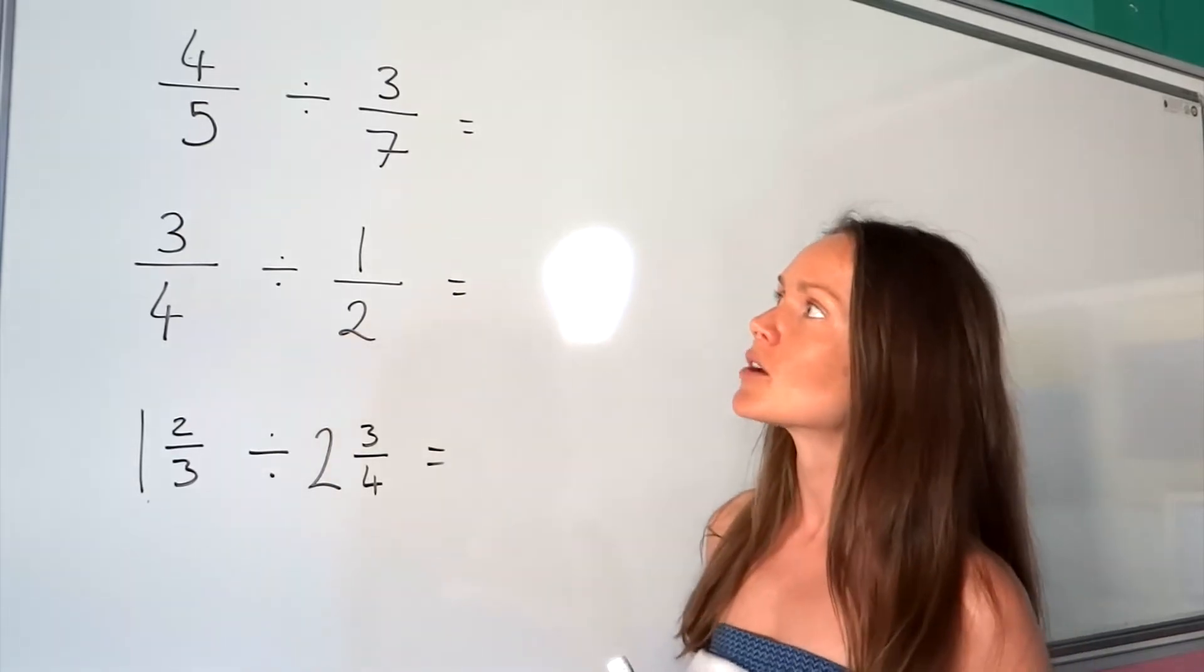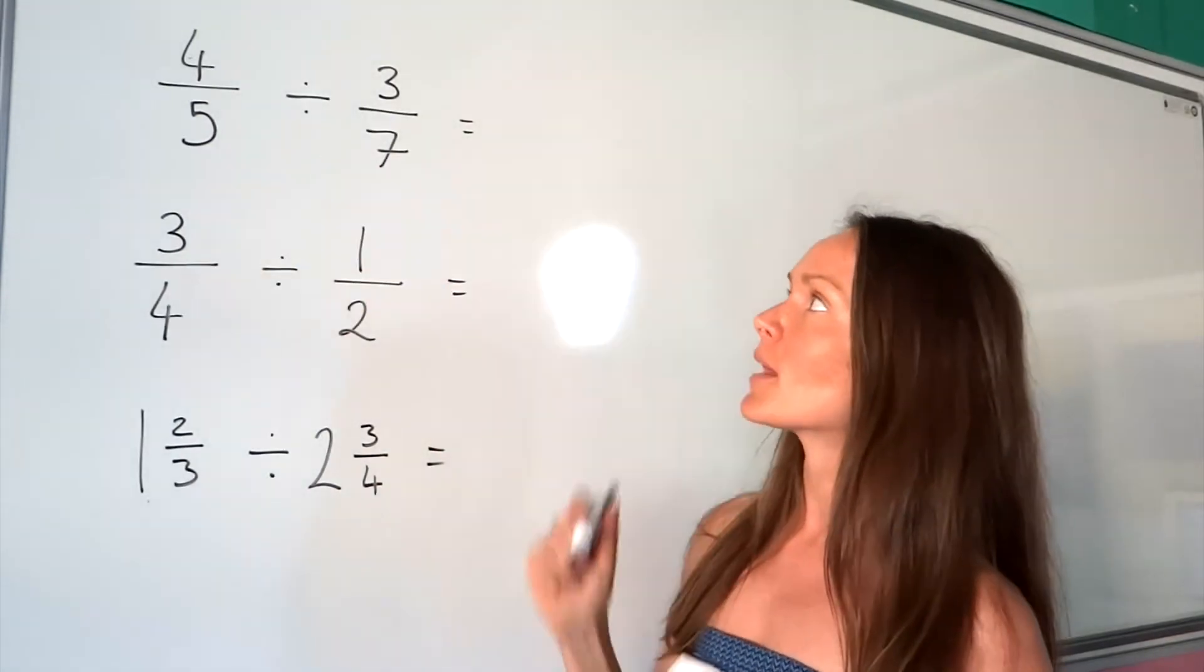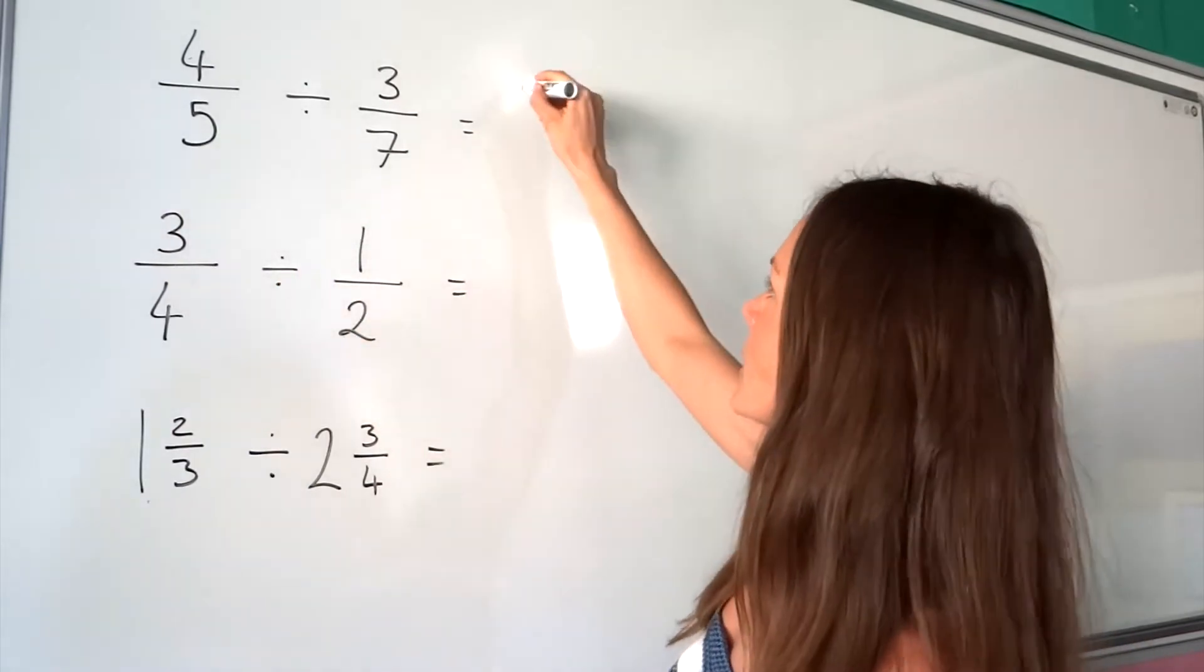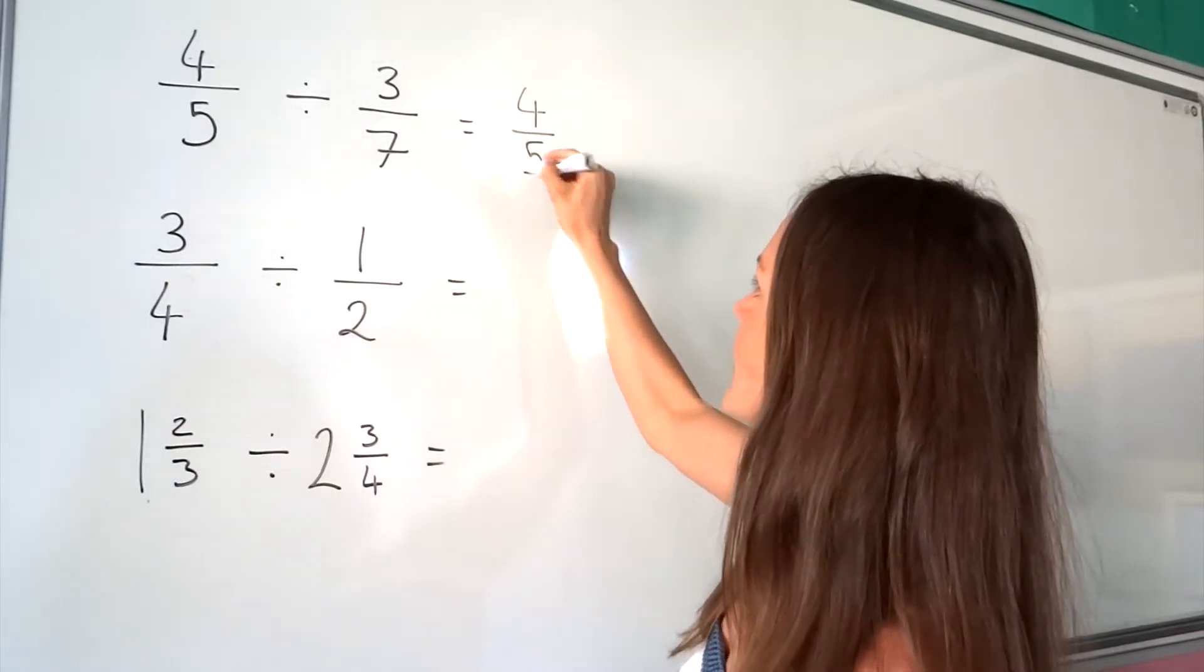So, let's look at the first example, 4 fifths divided by 3 sevenths. When we're dividing, I'm going to leave the fraction at the beginning as it is, so 4 fifths stays the same.